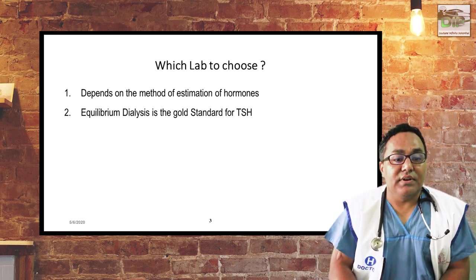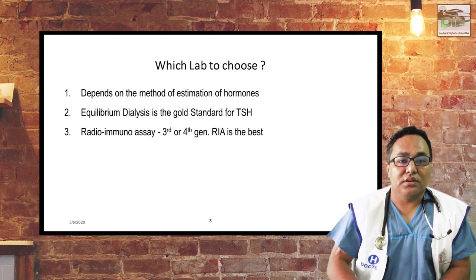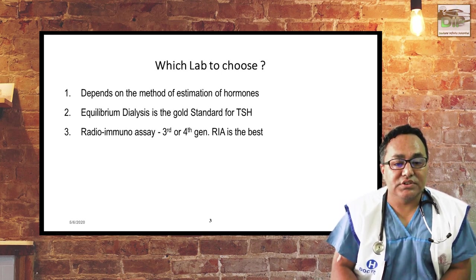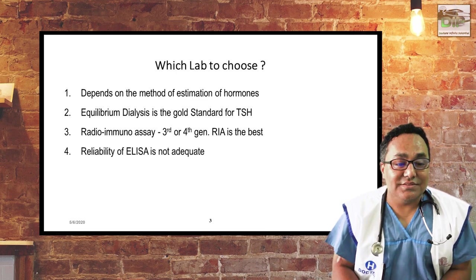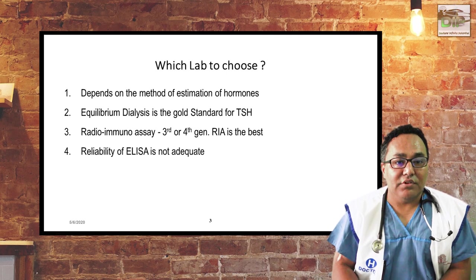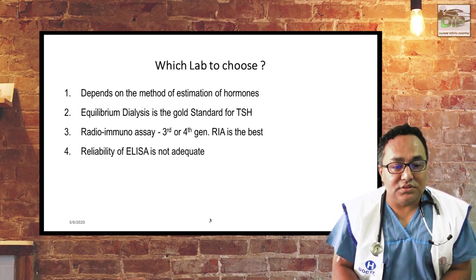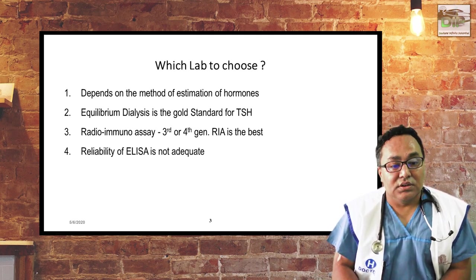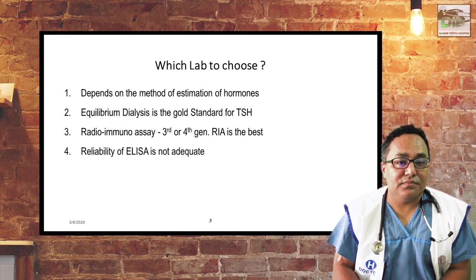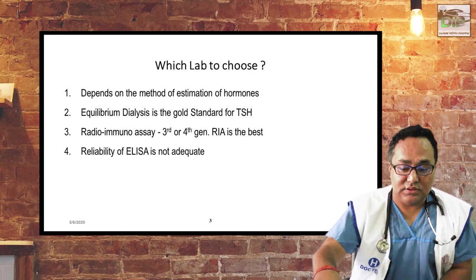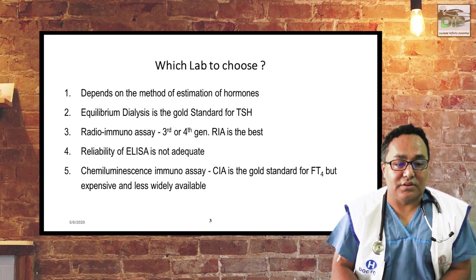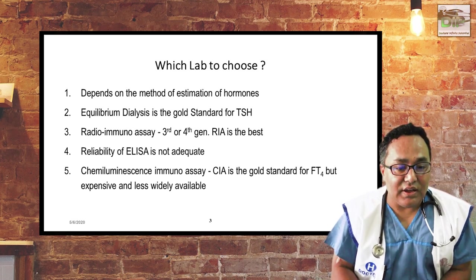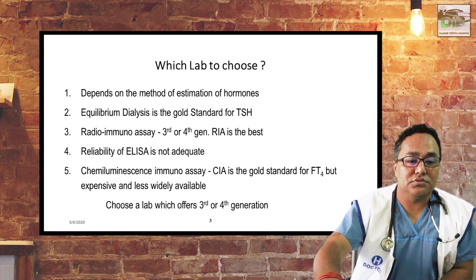The best method is equilibrium dialysis, which is the gold standard for TSH estimation, but it is not available here — only in western countries. The third and fourth generation radioimmunoassay is also not available in Nepal, but is available in India and western countries. The test done in most labs is ELISA, but it is not fully reliable. If you are doing the ELISA test, the patient should be in an empty stomach. The widely followed gold standard method in Nepal and India is the Kryptor method or chemiluminescence immunoassay method, though this test is expensive and only available in some big labs or institutes like BPKHS.